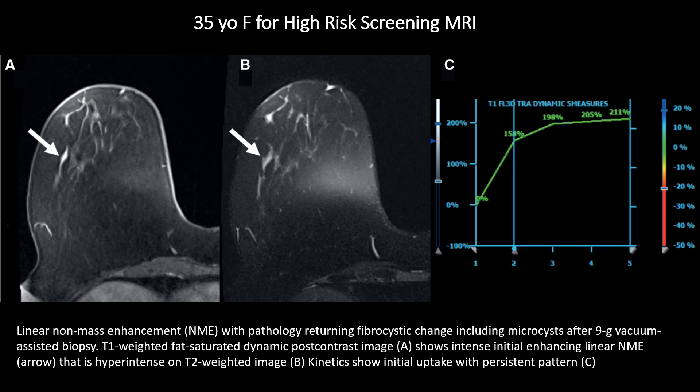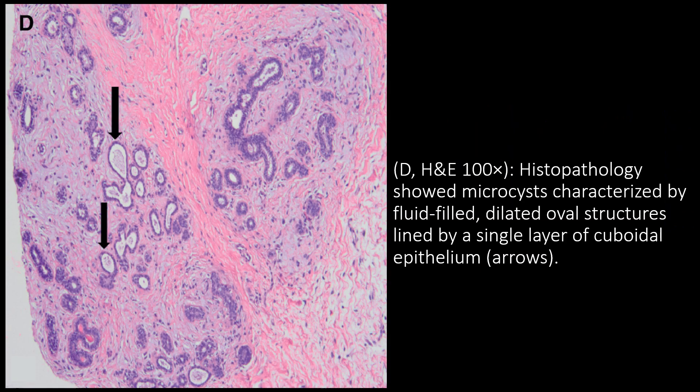This is a case of a 35-year-old female presenting for a high-risk screening MRI. You can see a linear non-mass enhancement in the lateral aspect of the right breast, and the pathology showed microcysts and fibrocystic change. On T1-weighted fat-saturated dynamic post-contrast image on panel A, intense initial enhancing linear non-mass enhancement is shown. It is hyper-intense on T2-weighted images, and on the kinetic curve, it shows initial uptake with persistent pattern. The histopathology showed microcysts characterized by fluid-filled dilated oval structures lined by a single layer of cuboidal epithelium.